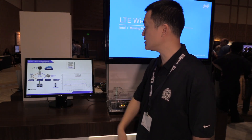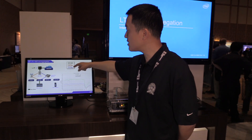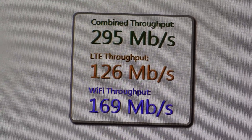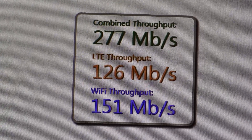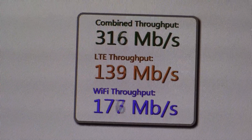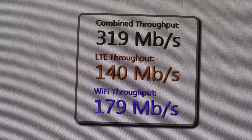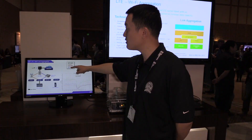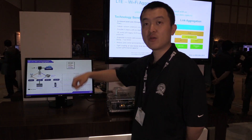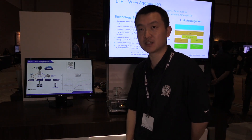As you can see, over LTE we can achieve over 100 Mbps. With Wi-Fi we also achieve over 140 Mbps. So together we have an aggregated throughput of about 300 Mbps.